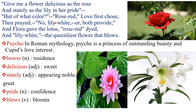But Cupid then asks about color: rose-red? Love first chose red, then prayed for lily-white, and finally pleaded for both colors to be provided. Flora then gave the lotus — rose-red and lily-white — the queenliest flower that blows.